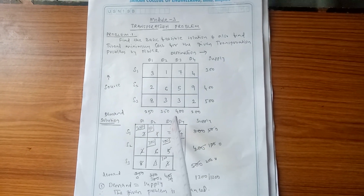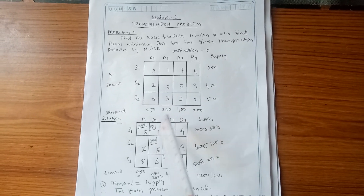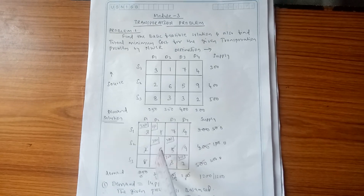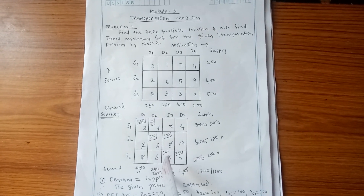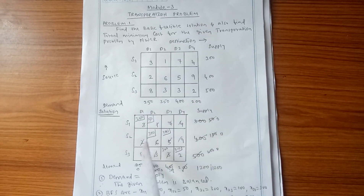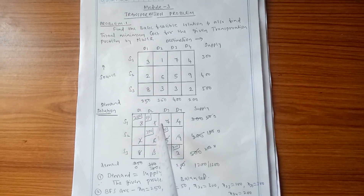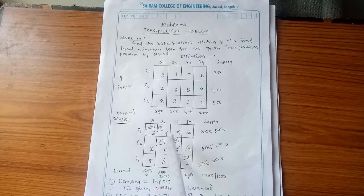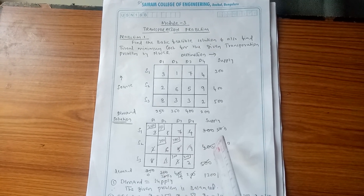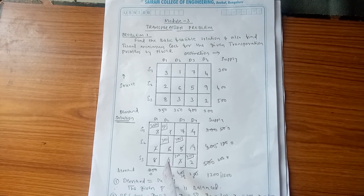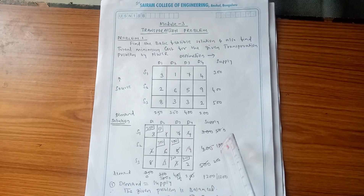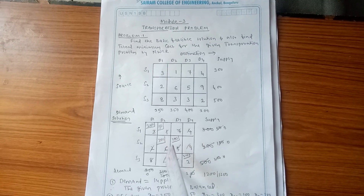Allocate 50 here and delete the corresponding row (supply exhausted). Demand for D2 becomes 350 − 50 = 300. Now for the next box with cost 6: demand is 300 (remaining for D2) and supply is 400 (S2). The least value is 300. Allocate 300 and delete that column. Supply becomes 400 − 300 = 100.